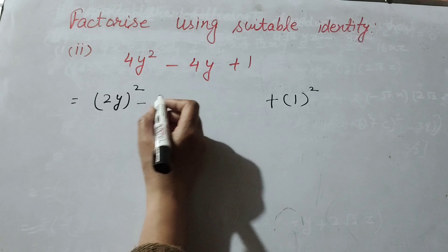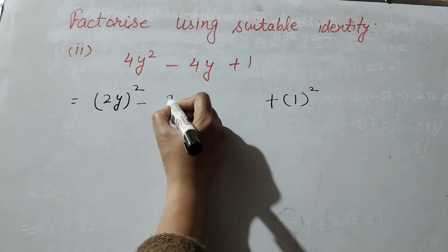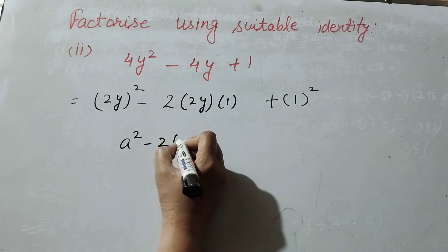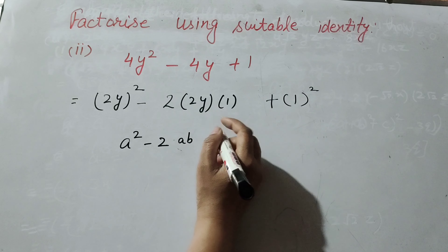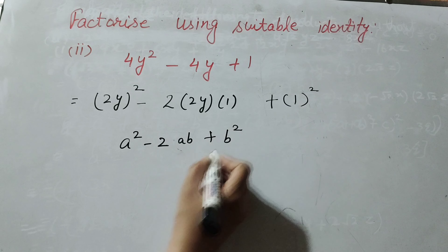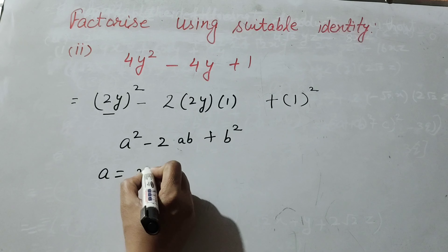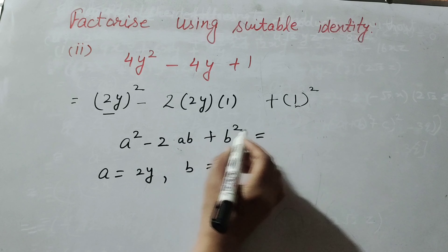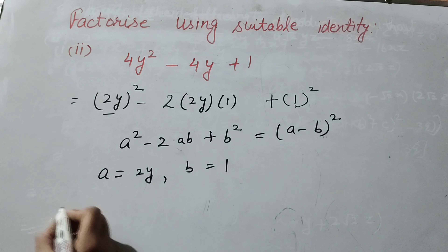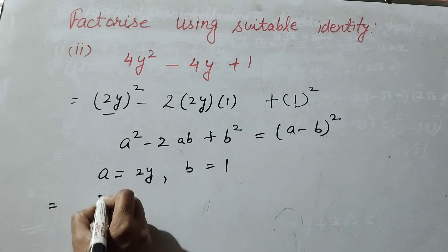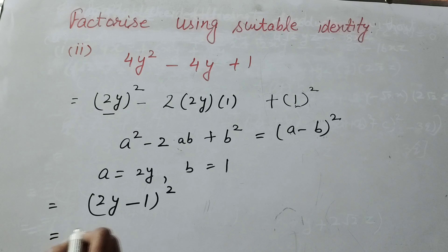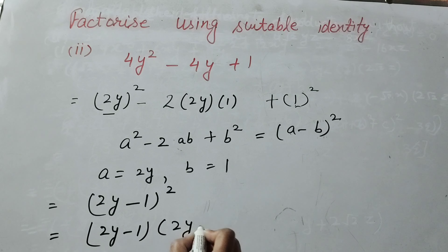1 is written as 1 squared, meaning 1 multiplied by 1. There is minus 4y, so we write it as 2 into 2y into 1. We use the identity: a squared minus 2ab plus b squared equals (a minus b) whole squared. Here a equals 2y and b equals 1. So the answer is (2y minus 1) whole squared, which can also be written as (2y minus 1) multiplied by (2y minus 1).